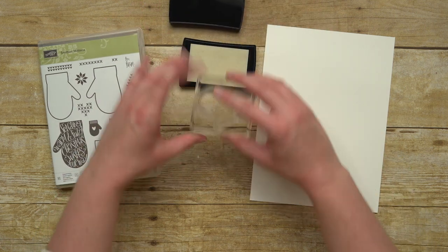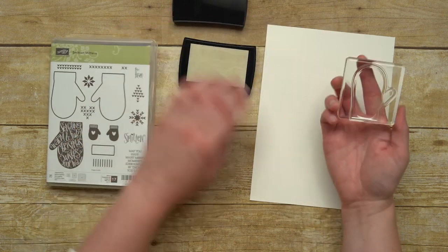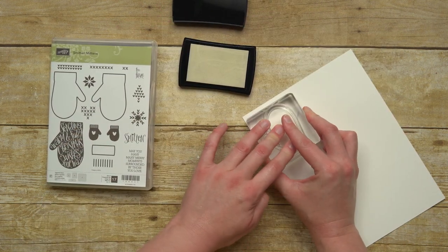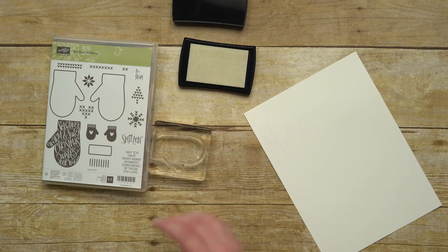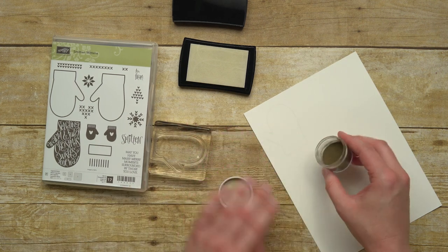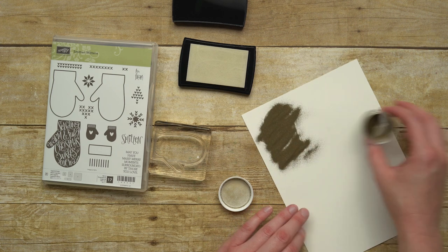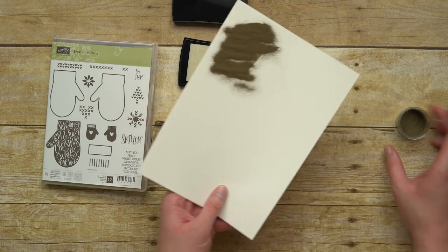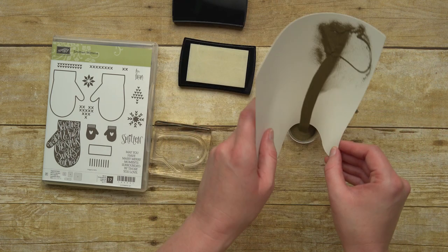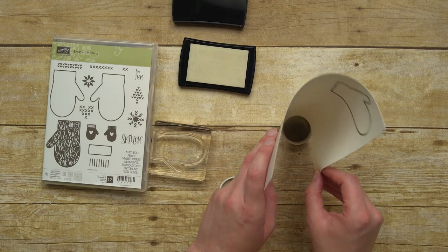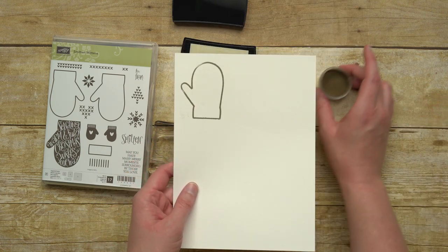I'm using VersaMark ink. Stamp your mitten down. I'm going to use gold embossing powder. Pour on your powder. Put the excess back into the container, and then you'll heat set that with the heat tool.